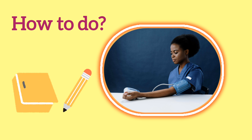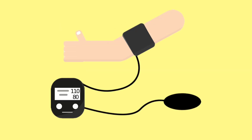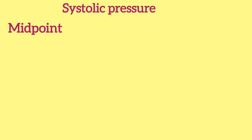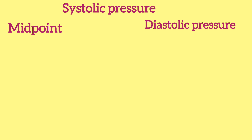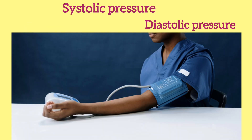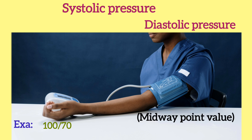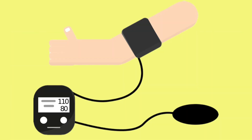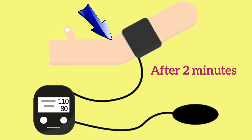How to do the tourniquet test? Record the patient's blood pressure first. After that, a blood pressure cuff is applied and inflated to the midpoint between the systolic and diastolic blood pressure for 5 minutes. What is the midpoint value? For example, if the patient's blood pressure is 100 over 70, the midpoint value is 100 plus 70 divided by 2, equal to 85 mmHg. Reduce the cuff and check the antecubital fossa after 2 minutes.